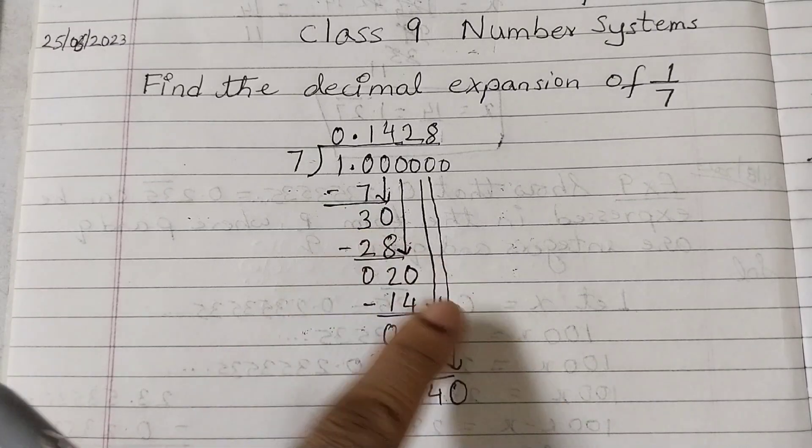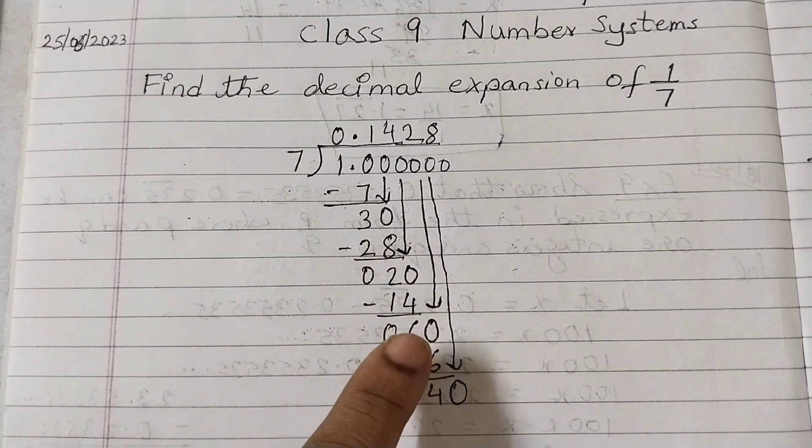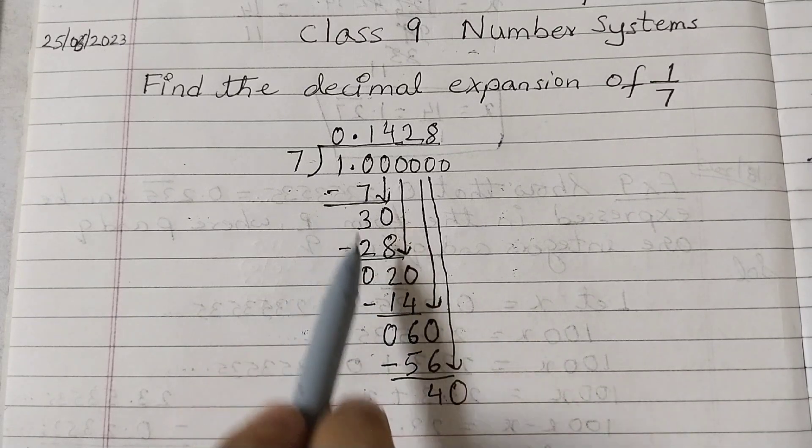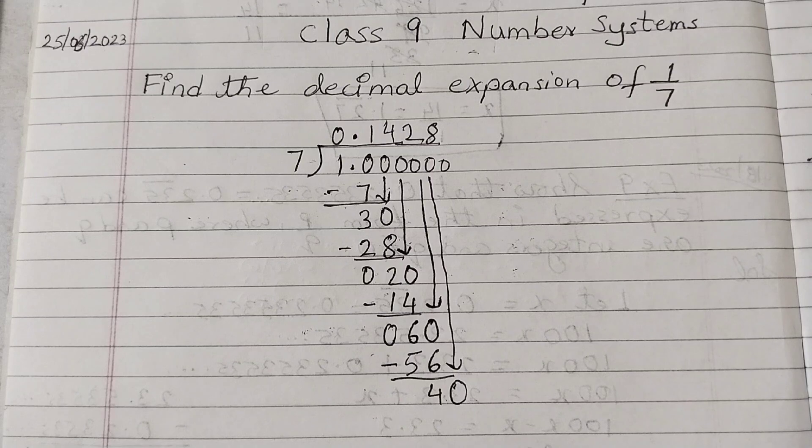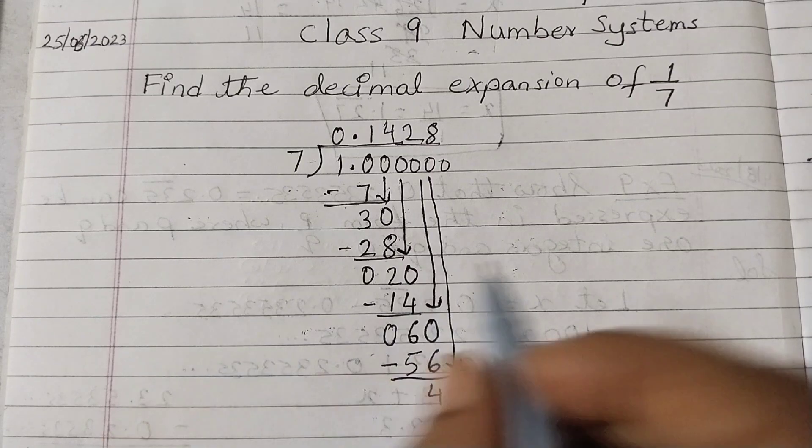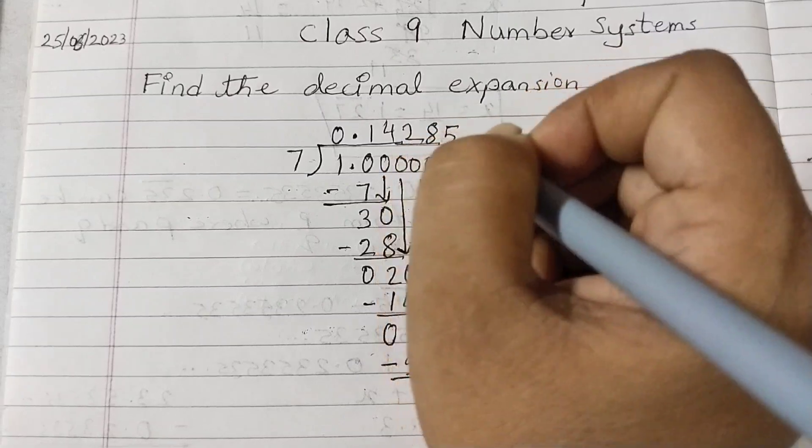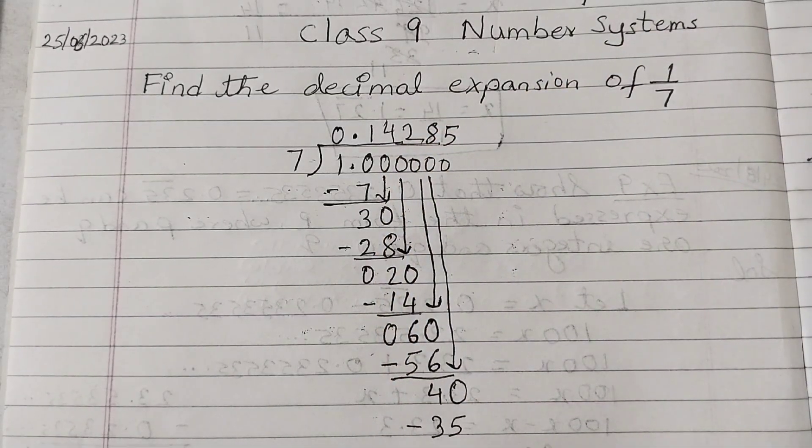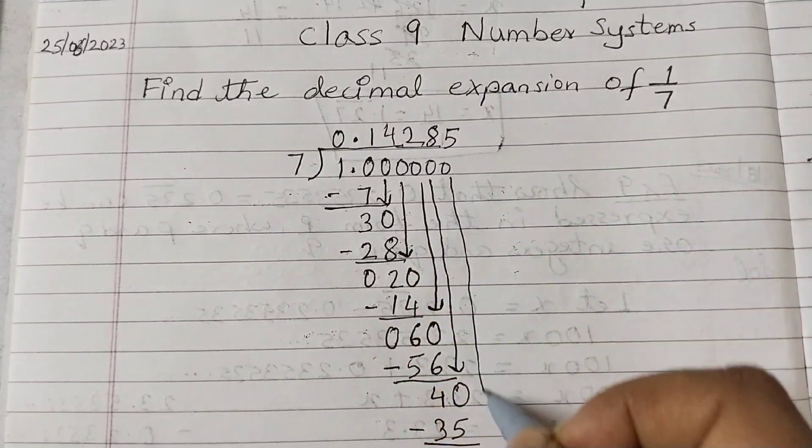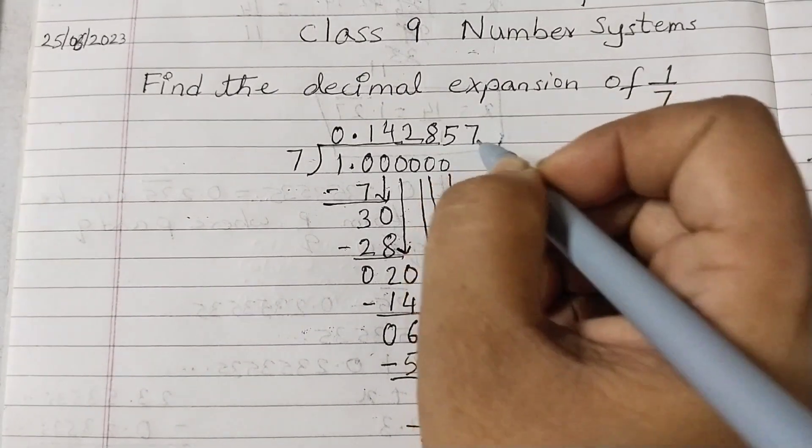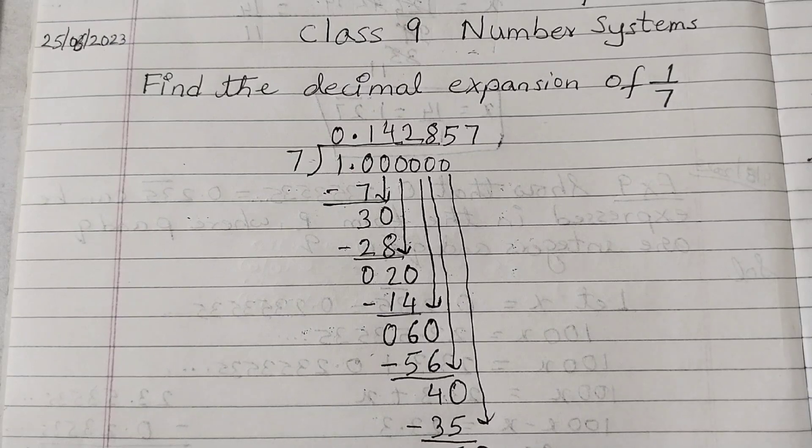Again, these arrows you need not show. In lower classes we show this for explanation. Here you can simply do it without the arrows. You can just go on adding 0s till you get your answer. 7 times 5 is 35. This is 5. Bring down the 0.